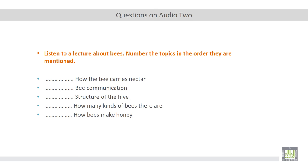Okay, so now listen to a lecture about bees. Number the topics in the order they are mentioned. So we have mentioned the five topics discussed in this audio track. So your role is to number the topics in the order they mentioned from one to five. Okay, so let's start.